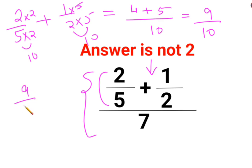9 upon 10 then we have divided by 7. Now whenever you have a division involved, you need to follow the rule of KCF where K stands for keeping the first number as it is, C stands for changing the division sign to multiplication and F stands for flipping or taking reciprocal of 7 which is 1 upon 7.